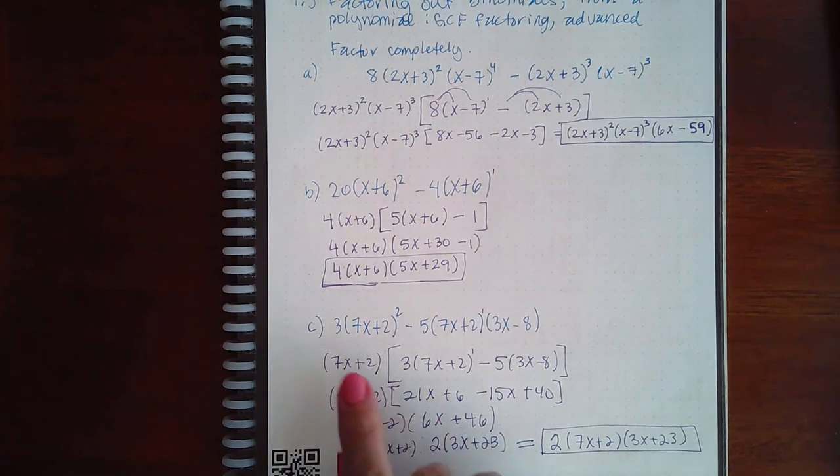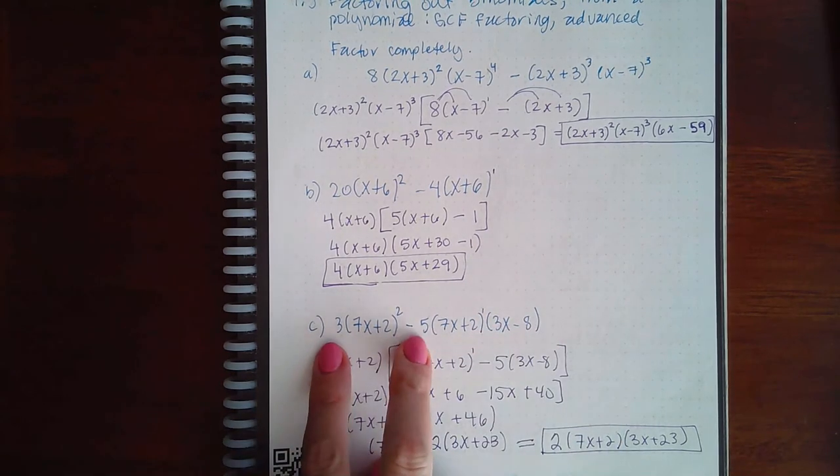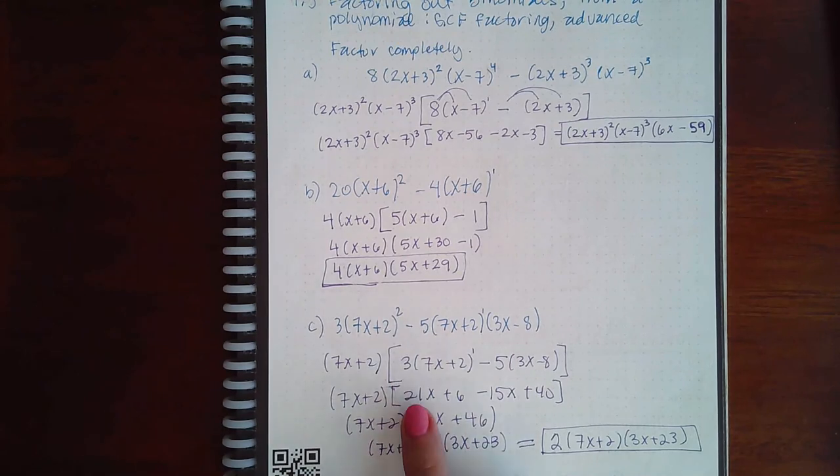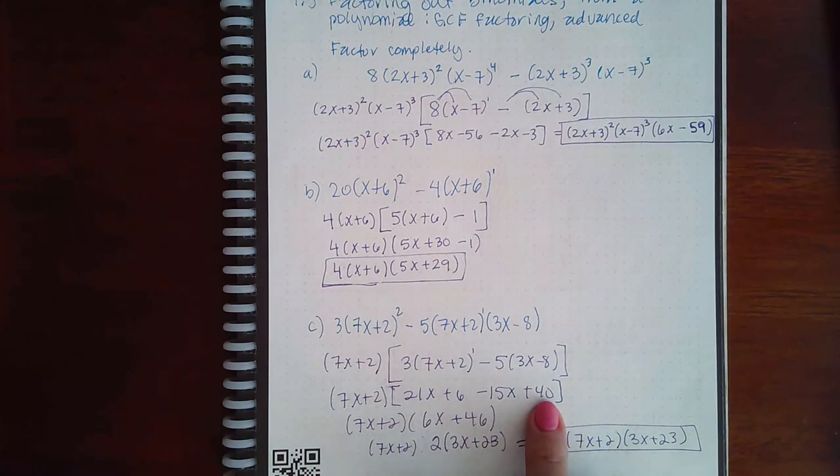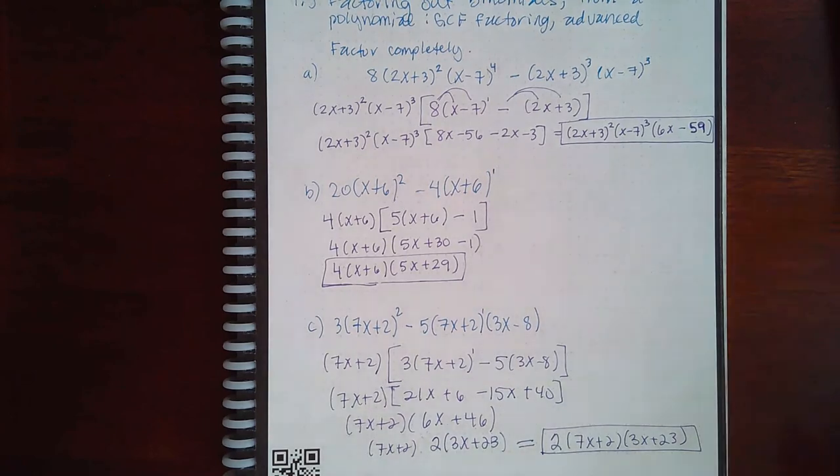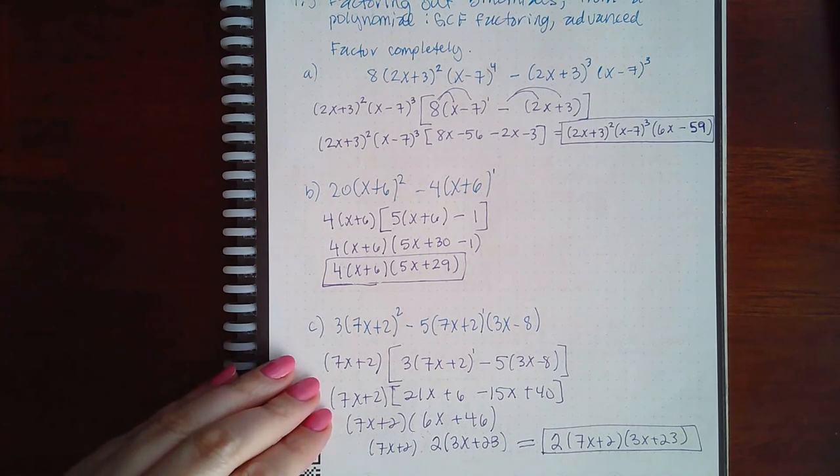Now you couldn't have factored out that 2 any sooner, because here they didn't have a factor of 2 in common, here they didn't have a factor of 2 in common, and here they didn't have a factor of 2 in common. It wasn't until you combined your like terms that you were actually able to factor out that 2. So make sure you check every single factor once you think you're done to see if it can be factored further.